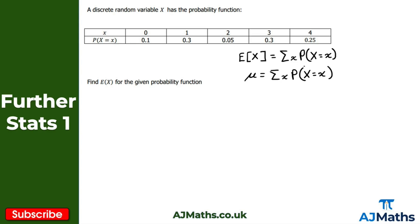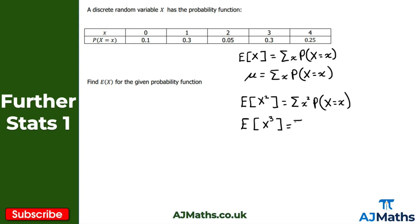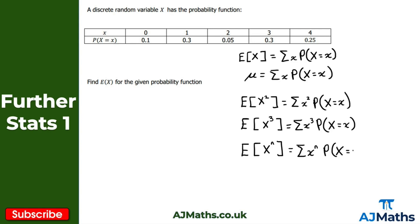We can generalize this result for finding the expectation. For example, the expectation of x squared is given by the summation of x squared times the probability of x equaling little x — this will be important in the next video on variance. More generally, the expectation of x to the n equals the summation of x to the n times the probability of x equaling little x.